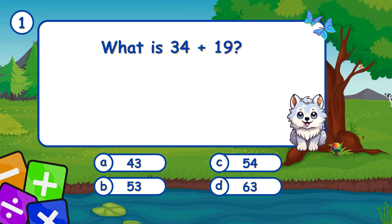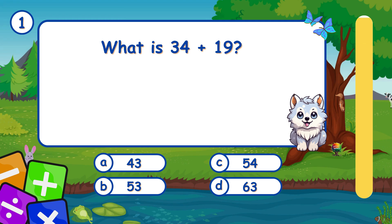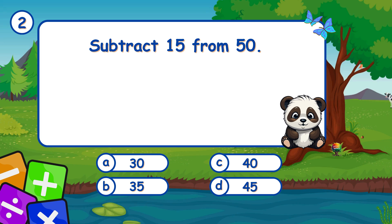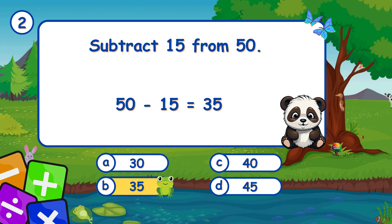What is 34 plus 19? It's B, 53. Adding 34 and 19 gives 53. Subtract 15 from 50. It's B, 35. Subtracting 15 from 50 leaves 35.